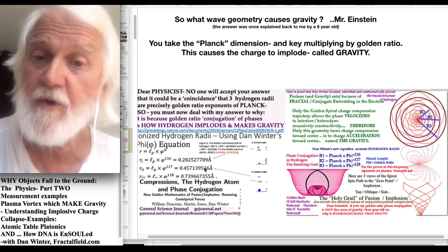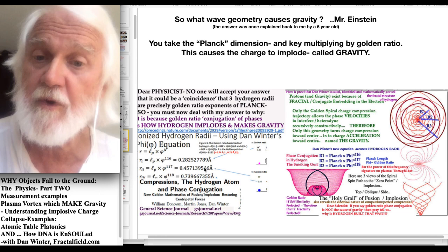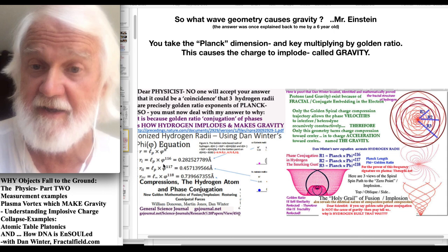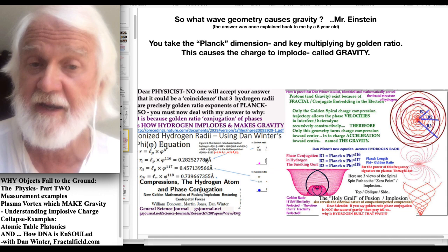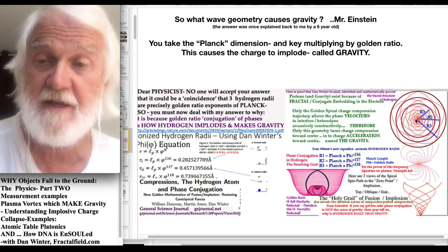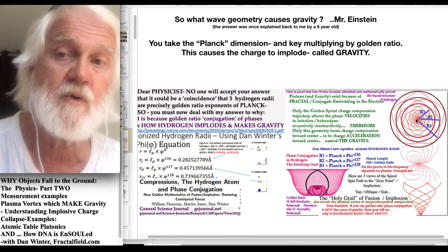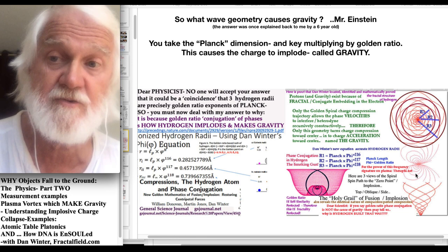My new equation for the radii of hydrogen, Planck here multiplied by integer exponents of golden ratio, produce very exact three radii of hydrogen, which proves this picture on the right here is actually how hydrogen is assembled, which is the smoking gun that proves how the implosive charge collapse causes gravity in the fractality of hydrogen now proven by my equation.